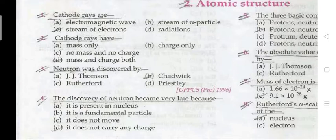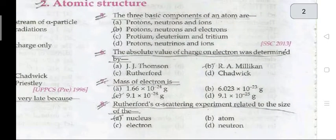Question 2: cathode rays have mass and charge both. Question 3: neutron was discovered by Chadwick. Question 4: the discovery of neutrons became very late because it does not carry any charge. Question 5: the three basic components of an atom are proton, neutron, and electron.